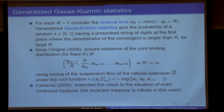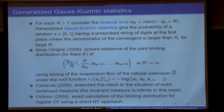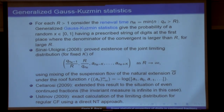Cellarosi extended this result to the situation of so-called even continued fractions, which I'm going to describe in a second. I should point out that in this case the invariant measure is infinite, so the ergodic-theoretical behavior of the map should be different. Shortly after, Alexei Ustinov found a very clever way of actually finding exact formulas for the limiting distribution for the regular continued fraction, using a direct number-theoretical approach that involves the Gauss map. And it's maybe one of the instances where one can do a little bit better with a direct number-theoretical approach.